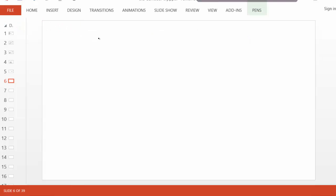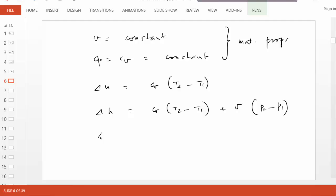Let's summarize. The SL model equations tell us: First, V is constant. Then it says Cp equals Cv is constant. These are both material properties. ΔU is Cv(T2 - T1). ΔH is Cv(T2 - T1) + V(P2 - P1). And finally, ΔS is Cv ln(T2/T1). That's the summary.